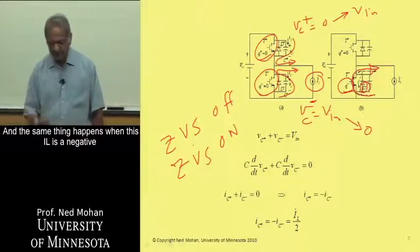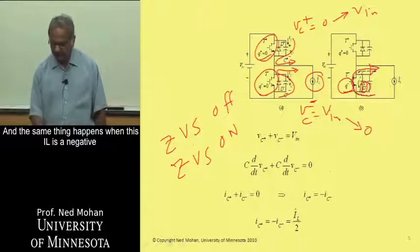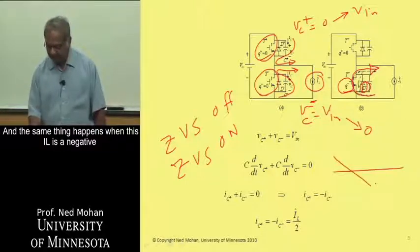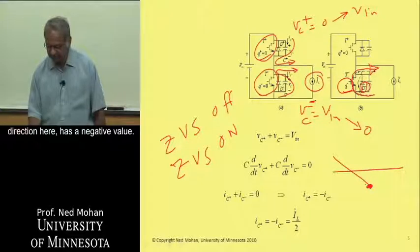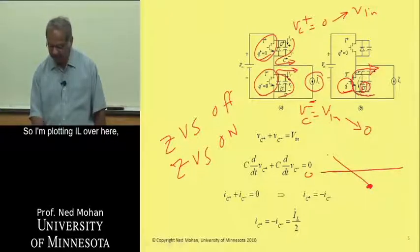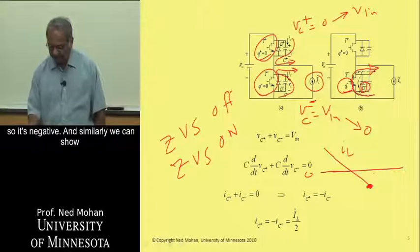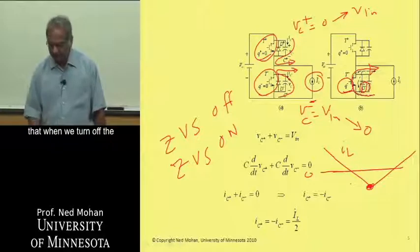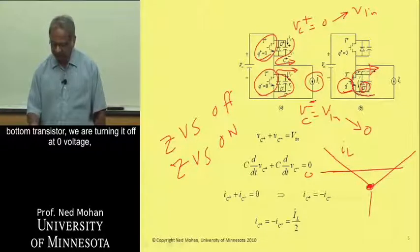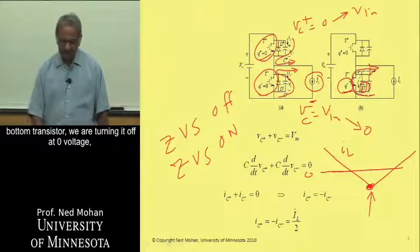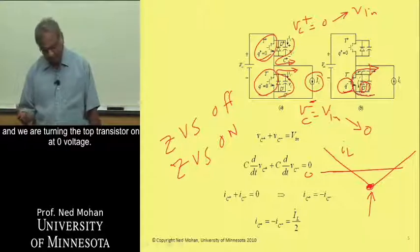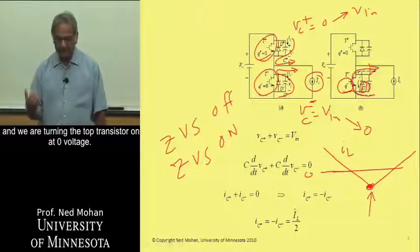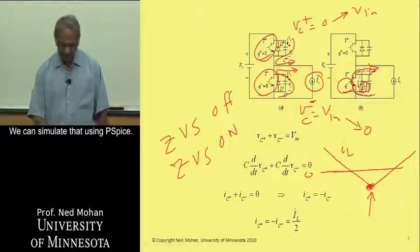and the same thing happens when this IL here is in a negative direction over here, has a negative value, so I'm plotting IL over here, so it's negative, and similarly we can show that when we turn off the bottom transistor, we are turning it off at zero voltage, and we are turning the top transistor on at zero voltage.